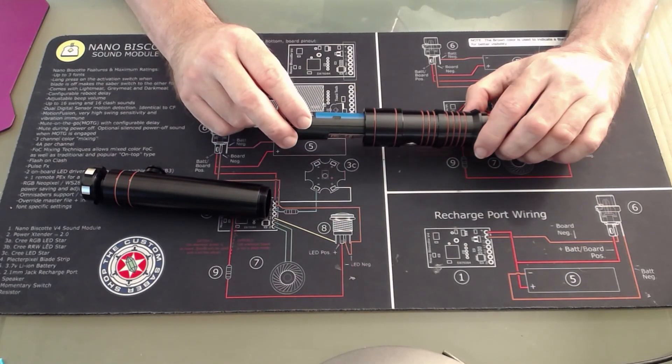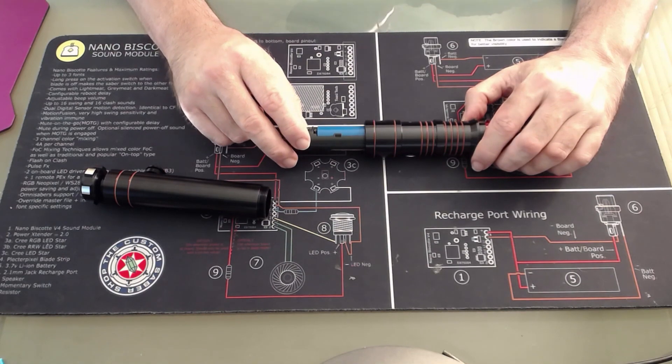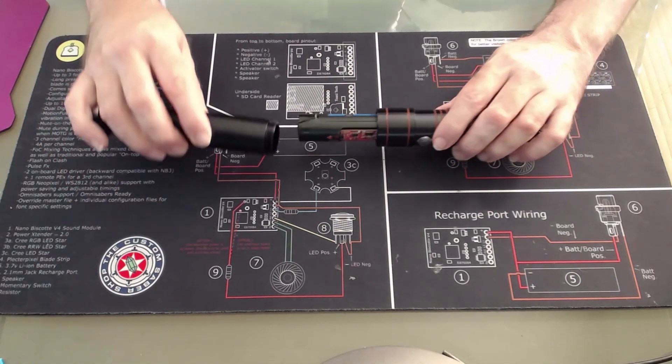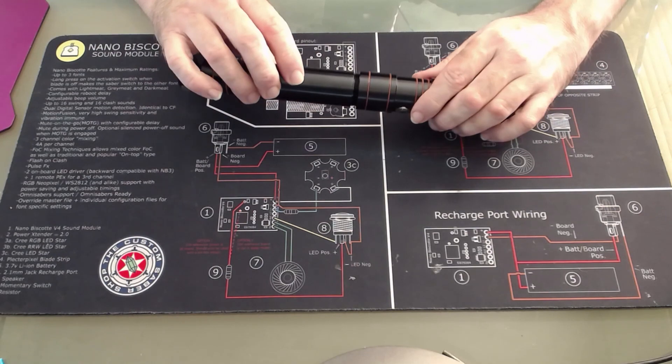Charge cycle may take a few hours. When your saber is fully charged, the lights will go out and you are all ready to go.